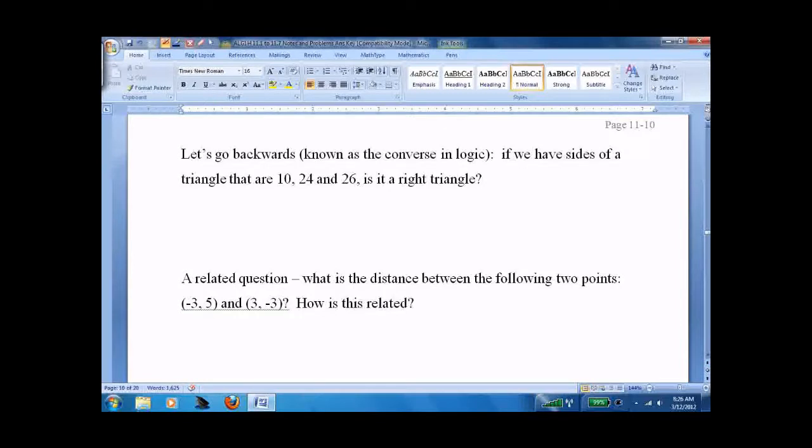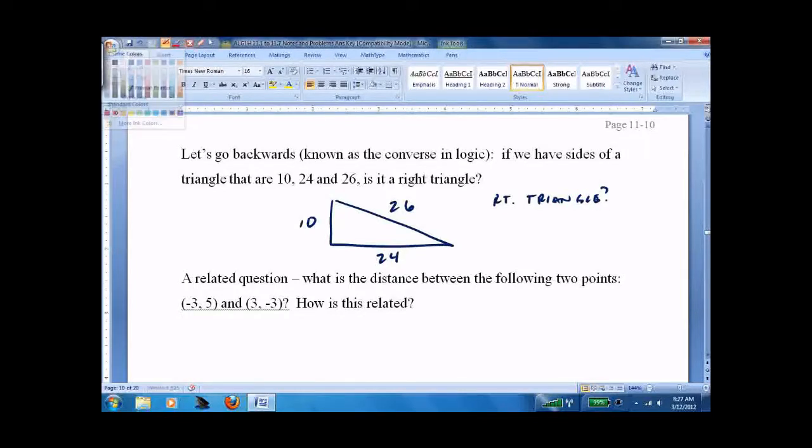Now, let's go backwards. I give you a triangle. I say one side is 10, the other side is 24, the other side is 26. I say, is it a right triangle? You say, how the heck would I know? I say, well, see if it obeys the Pythagorean theorem. If it is, it's a right triangle. And I call it going backwards.